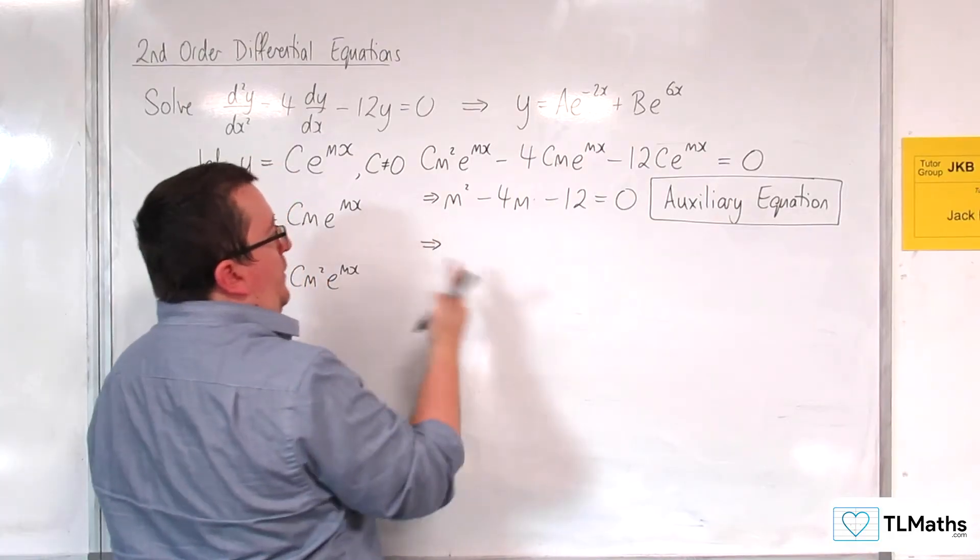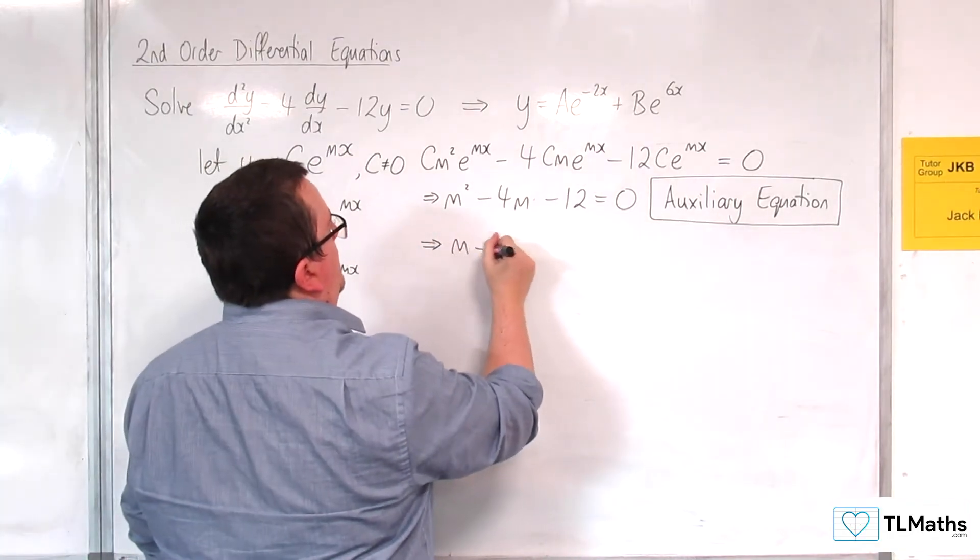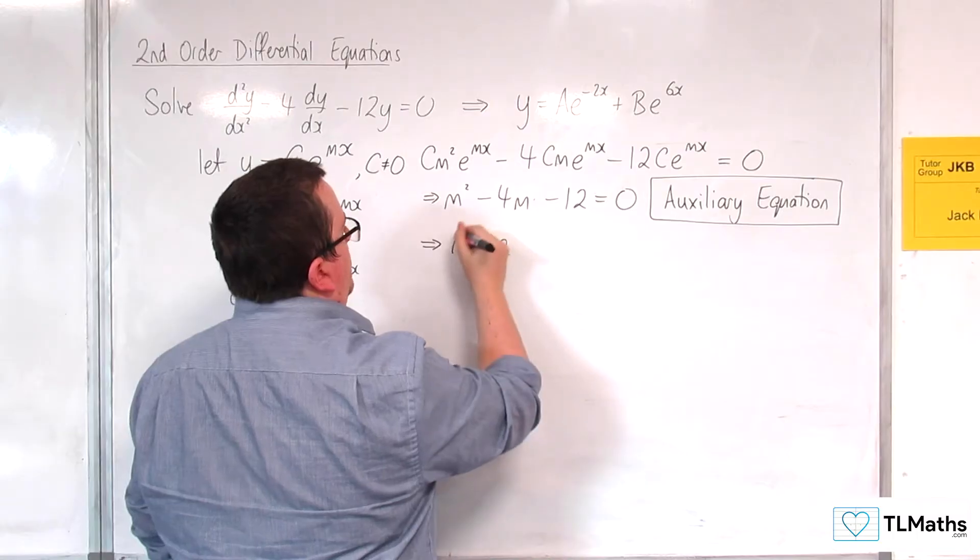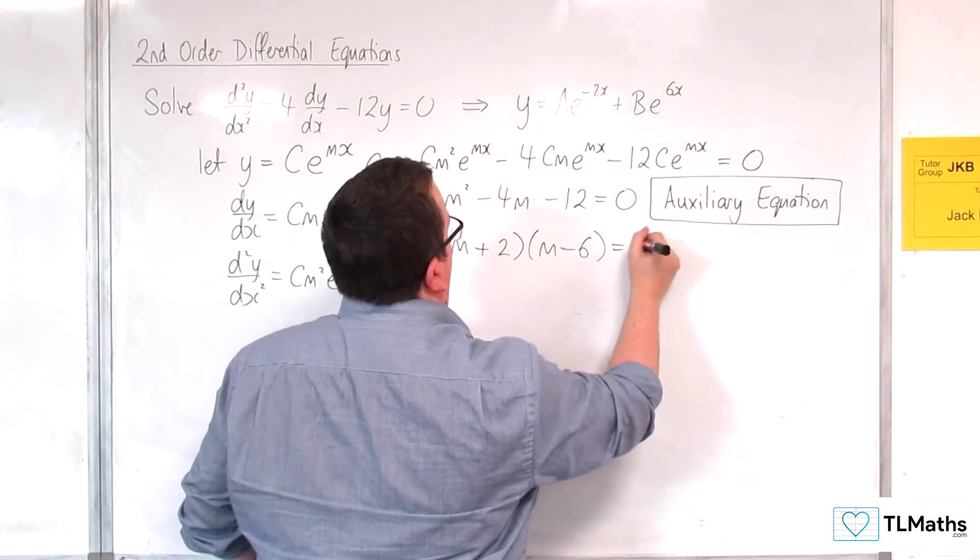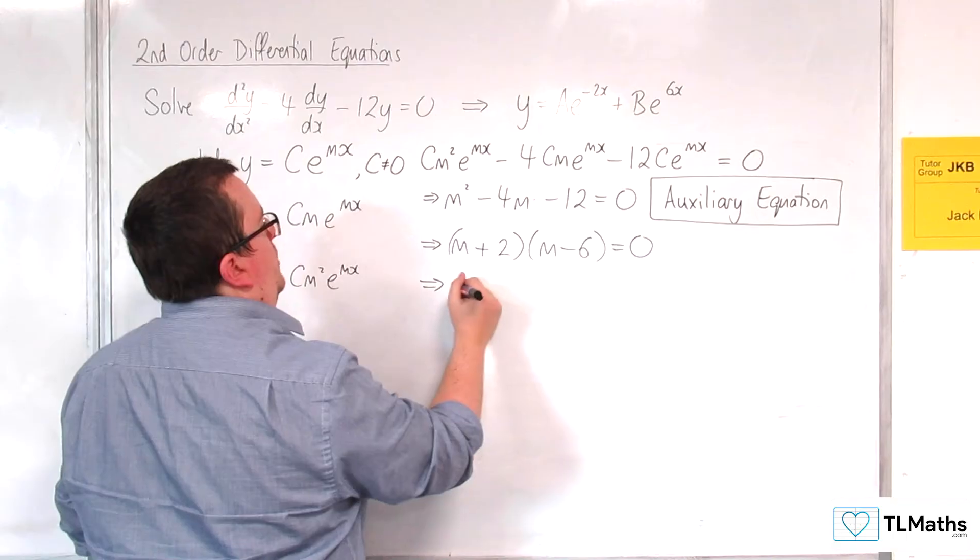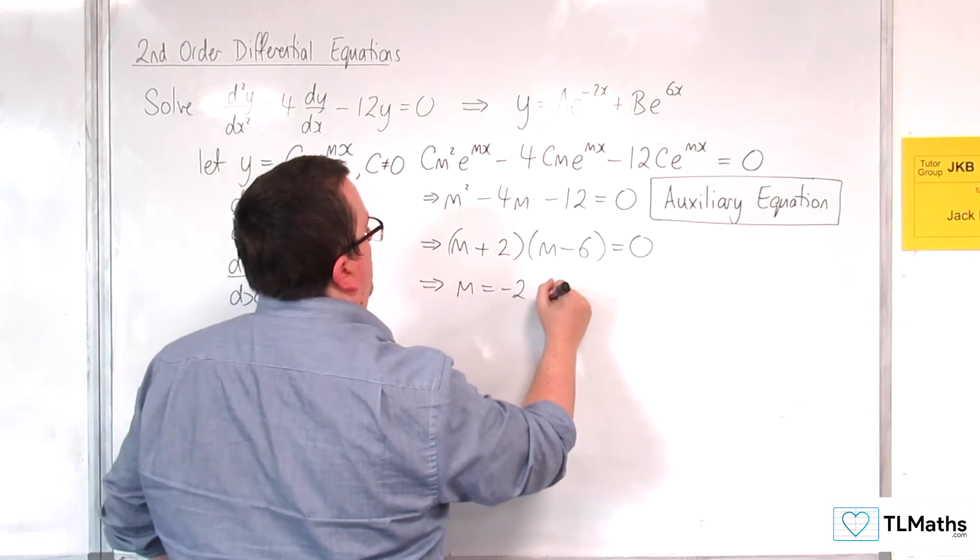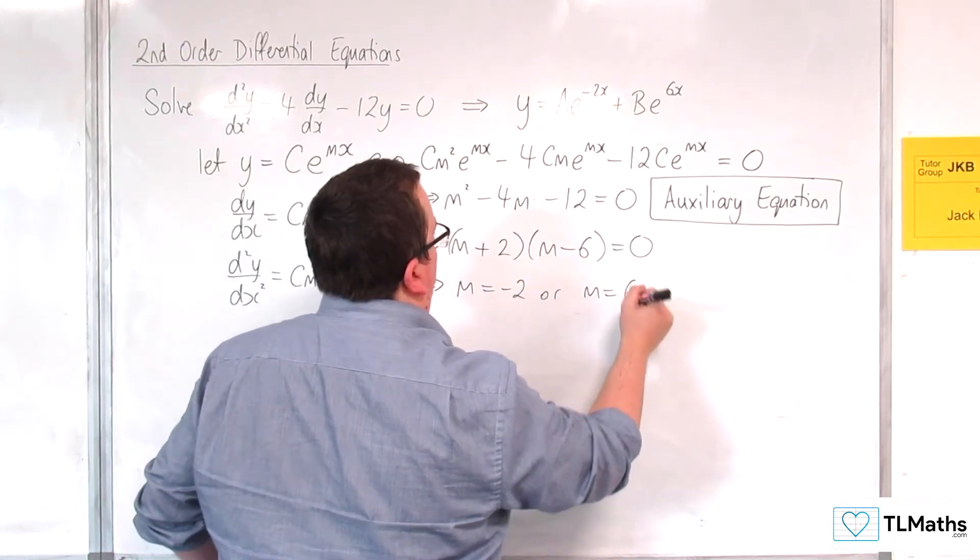So if we solve this, we can factorize it: (m + 2)(m - 6) = 0. So either m = -2 or m = 6.